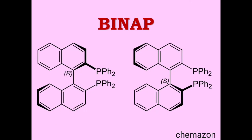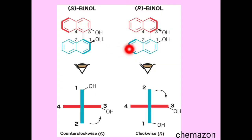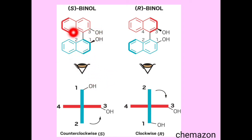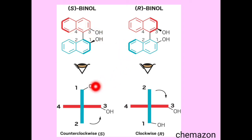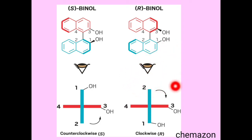Now let us understand how to assign RS nomenclature in BINOL. Looking at this molecule from the side, the groups coming towards you are OH and this carbon, so we write them on the horizontal position. Accordingly, groups 1 and 2 get higher priority since oxygen is higher in atomic number. From 1 to 2 to 3 it is anti-clockwise or counterclockwise, so the absolute configuration is S. In the other molecule, from 1 to 2 to 3 it is clockwise and the absolute configuration is R.